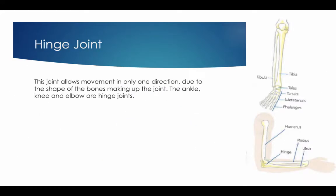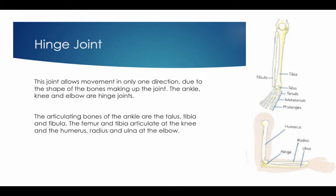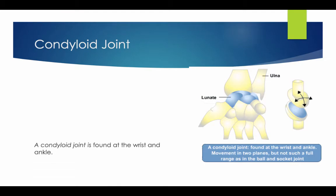A hinge joint allows movement in only one direction, due to the shape of the bones making up the joint. The ankle, knee, and elbow are hinge joints. The articulating bones of the ankle are the talus, the tibia, and the fibula. The femur and the tibia articulate at the knee, and the humerus, radius, and ulna articulate at the elbow.